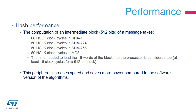These are the times it takes to process a single block of data depending on the chosen algorithm. HCLK is the CPU clock and can go as high as 216 MHz. Note that the main benefit of using a hardware accelerator is to increase speed and save power compared to a full software implementation of the hash functions.